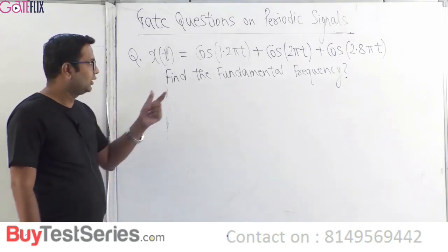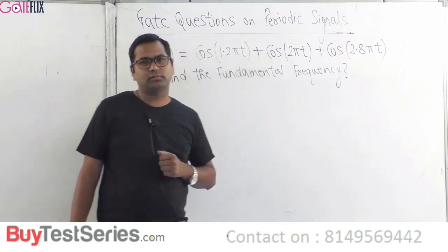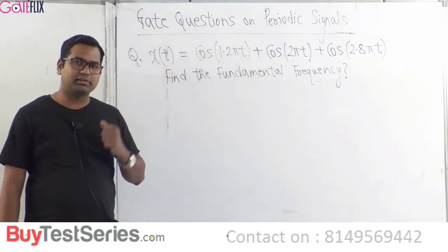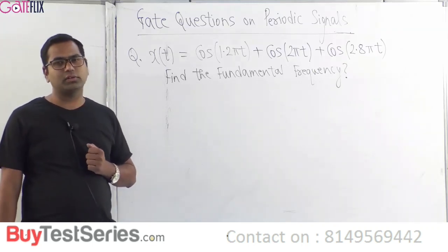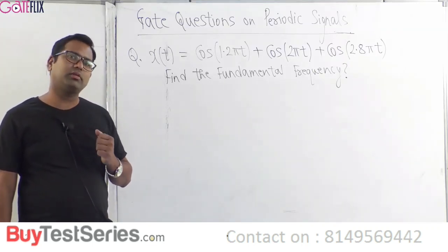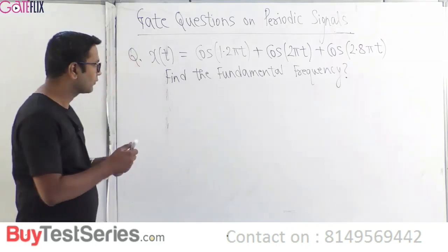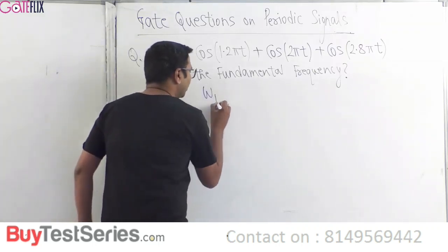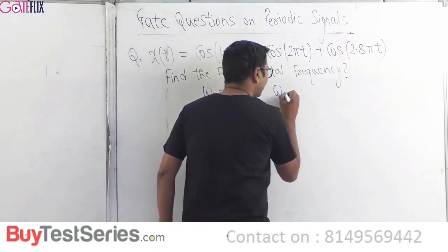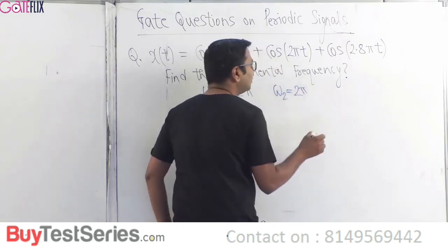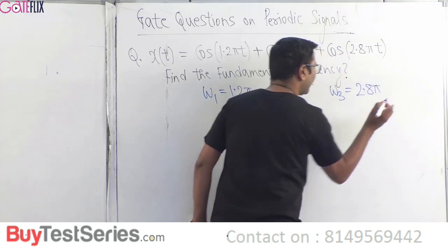Now some gate questions on periodic signals. The first question involves addition of three periodic signals — previously we saw addition of two signals, but gate questions can have three. We identify ω₁ = 1.2π, ω₂ = 2π, and ω₃ = 2.8π.